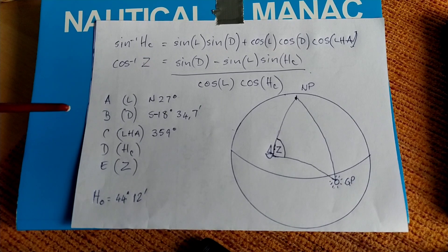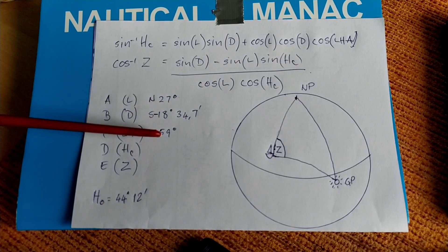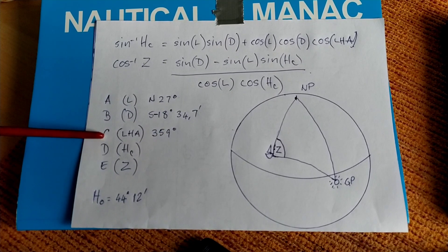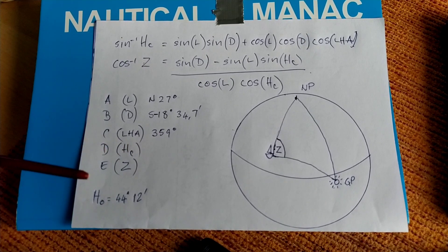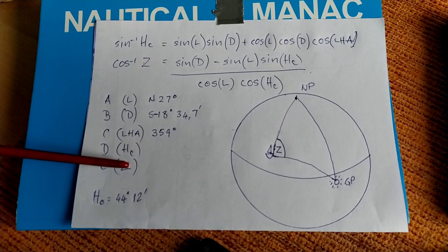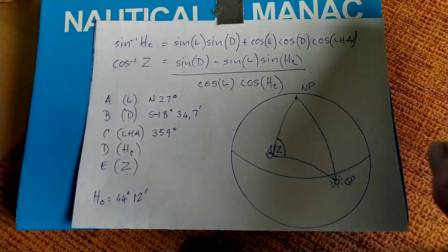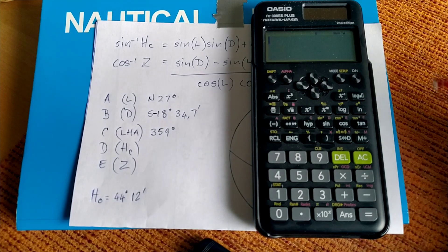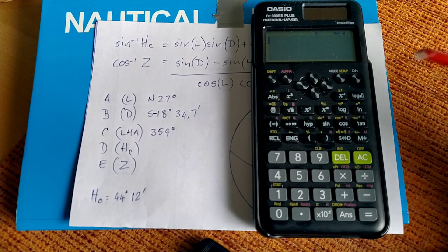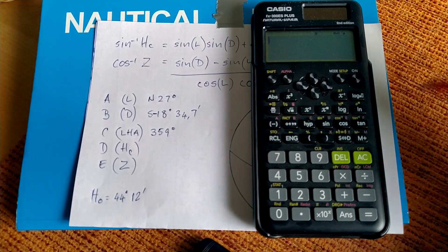The calculator I'm going to be using is a Casio FX300ES+, and it has a number of programmable variables. There's nine of them in total, but we're going to be using five of them. We're going to assign latitude, declination, and LHA to the first three variables. We're going to calculate HC, and then we're going to assign that to variable D. And then we're going to calculate the azimuth angle, and we're going to assign that to E. So let's just take a look at how that's done.